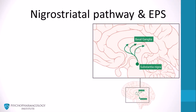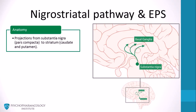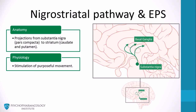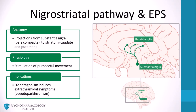The nigrostriatal dopamine pathway is linked to neurological side effects caused by D2 antagonists. The nigrostriatal system contains about 80% of the brain's dopamine. This tract projects from cell bodies in the pars compacta of the substantia nigra to terminals that innervate the striatum, caudate, and putamen. This pathway is involved in motor planning; dopaminergic neurons stimulate propulsive movement. D2 antagonism induces extrapyramidal symptoms, as is the case with first-generation antipsychotics. High-potency D2 antagonists, such as haloperidol, frequently cause pseudoparkinsonism.